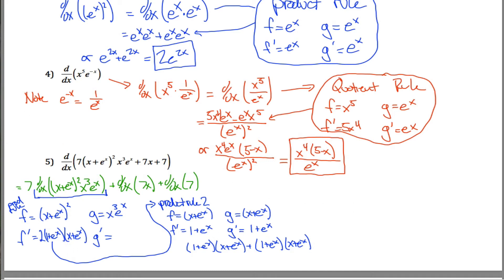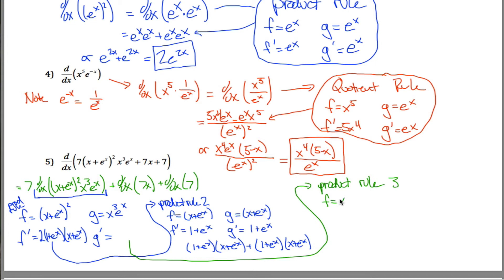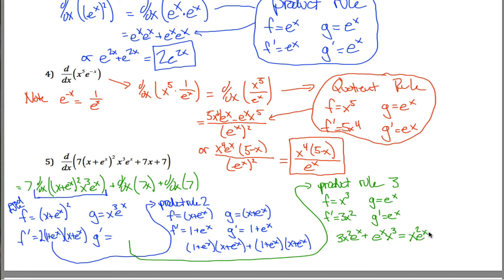For the third product rule, to find g prime of x cubed e to the x: f is x cubed with f prime 3x squared, and g is e to the x with g prime e to the x. The product rule gives 3x squared times e to the x plus e to the x times x cubed. This can be written as x squared e to the x times 3 plus x.